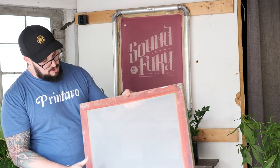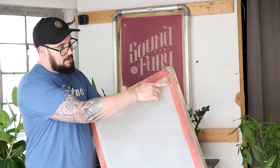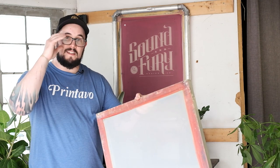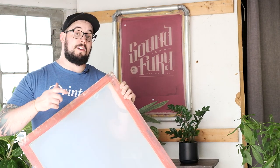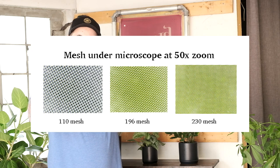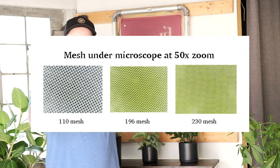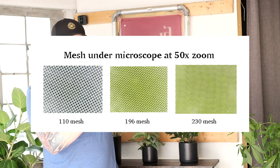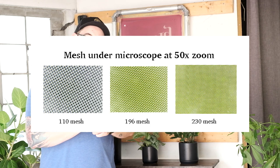Let's talk about what the actual mesh number means. This is a used screen — we can see some old ghost imaging, some hazing happening. Up in the corner, it says 156. What that is saying is that in every one inch by one inch area, there are 156 openings. This is really a woven mesh, knuckle over knuckle making a mesh opening, so there are 156 of those individual openings in a one-by-one area.